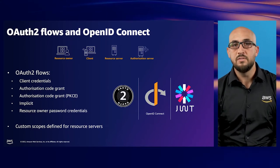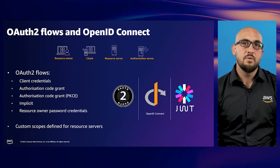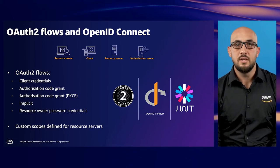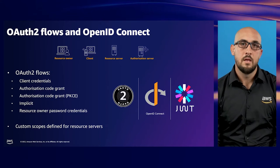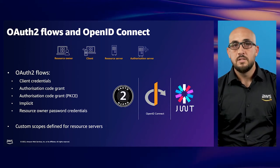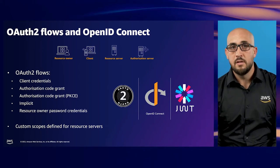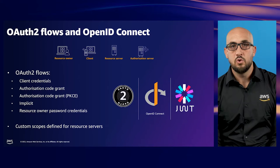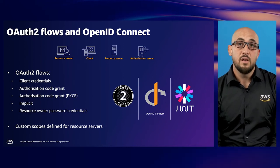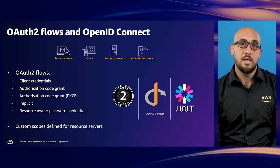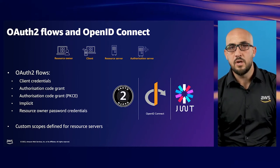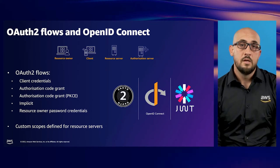The OAuth 2 protocol has a number of different authorization flows. Depending on the makeup of your design and the entities interacting with your application, there will always be an option to choose. We have four key actors: the resource owner, which is an entity that can grant access to a protected resource — typically the end user; the client, an application requesting access to a protected resource on behalf of the resource owner; the resource server, hosting the protected resources, typically an API; and the authorization server, which authenticates the resource owner and issues tokens after being provided authorization.